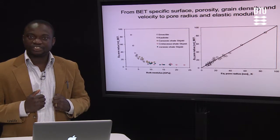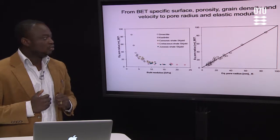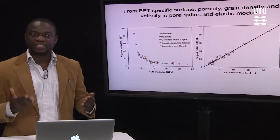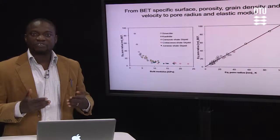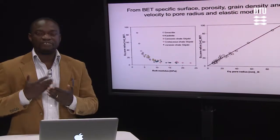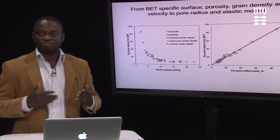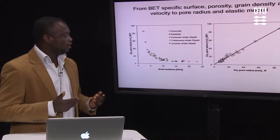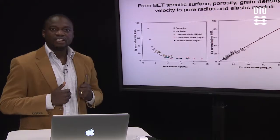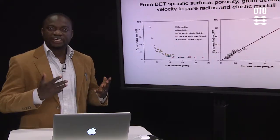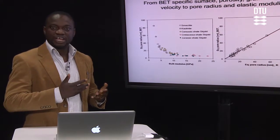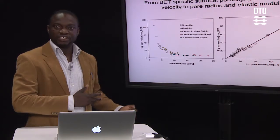From this, we got an exponential relationship where we could possibly predict equivalent pore radius when you have velocity data from the field. And when you do that, you will get equivalent pore radius at the field scale.